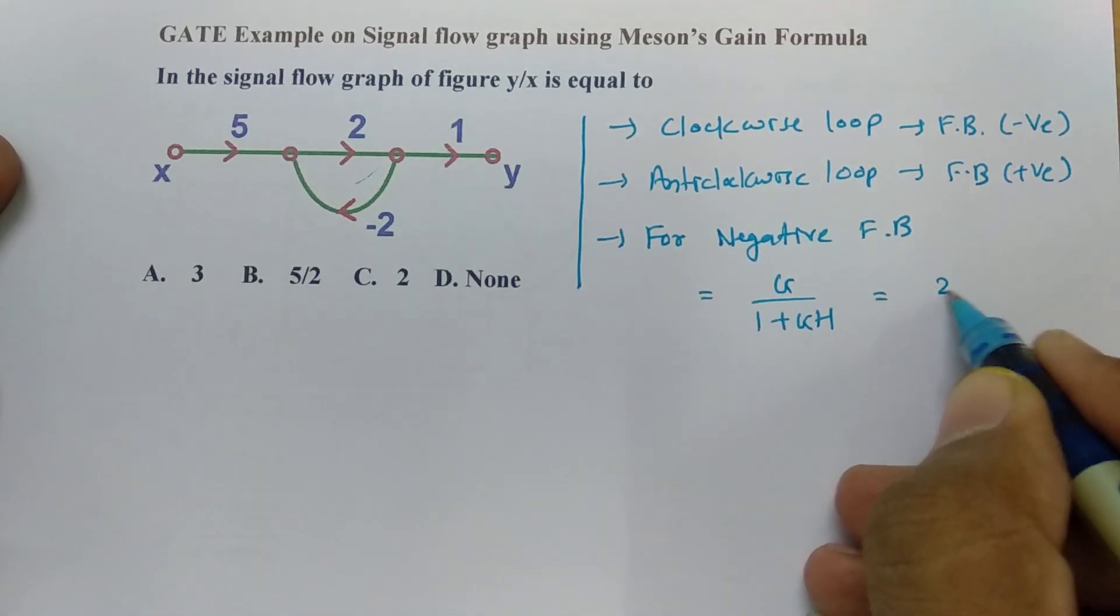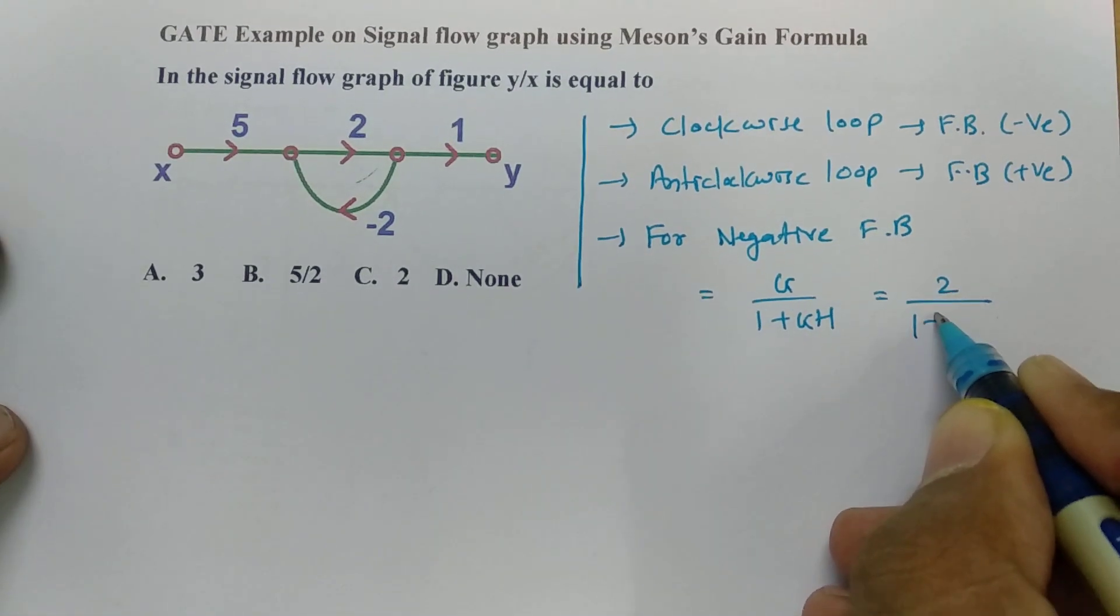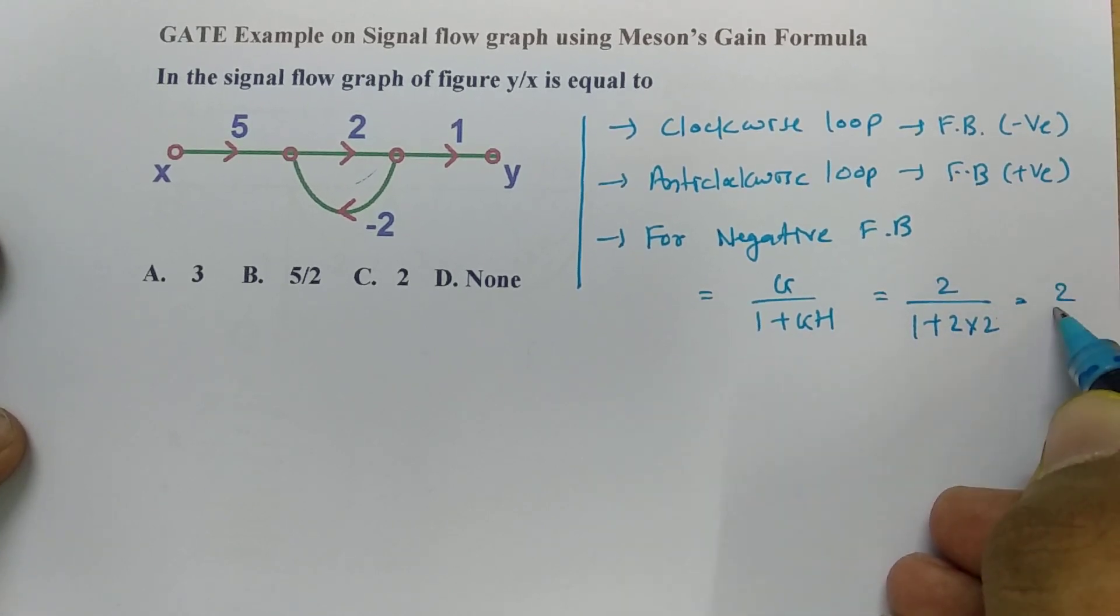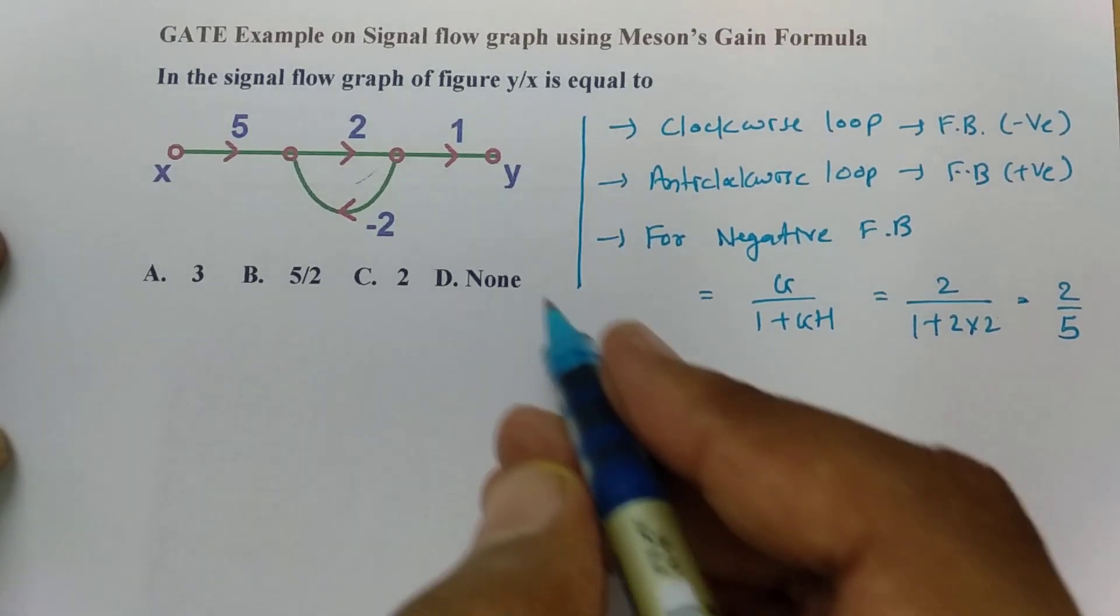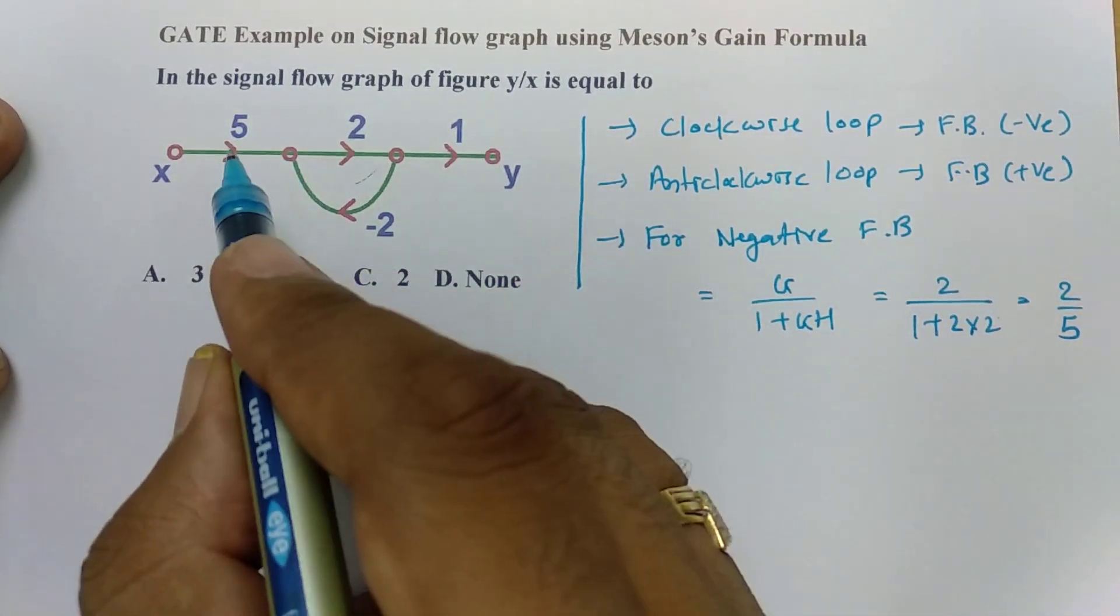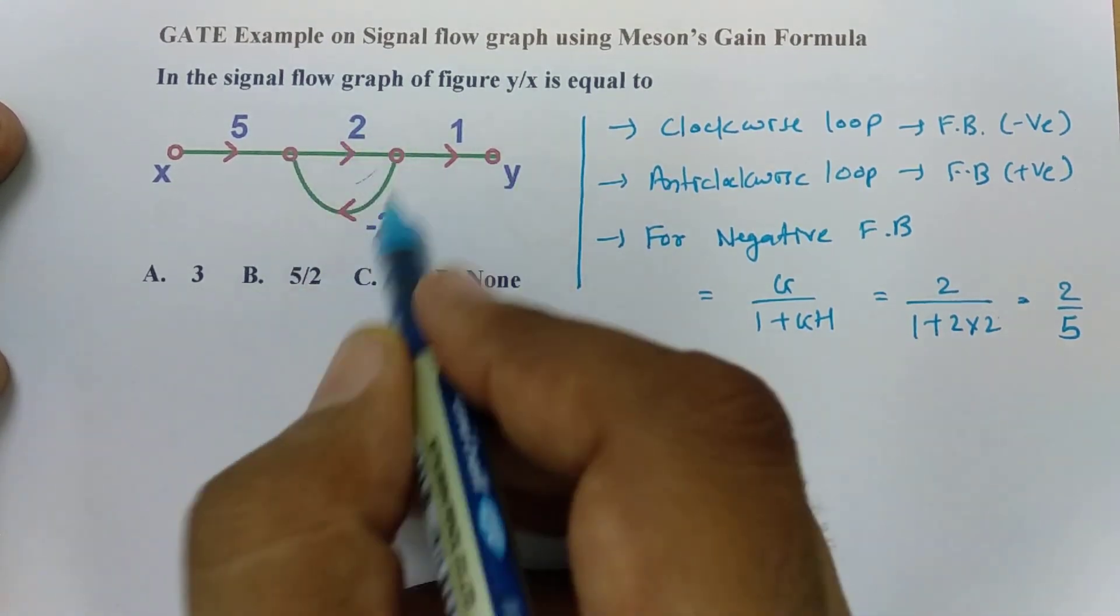So this will be 2 divided by 1 plus 4. So this is 2 divided by 5. So if you want to calculate this transfer function then that is just simply this into this into this and this is actually 2 by 5.